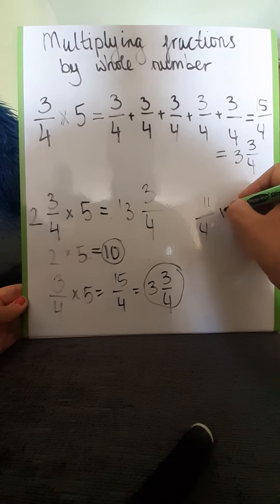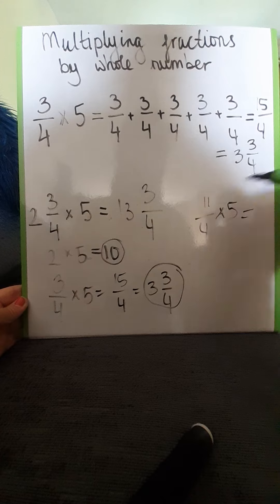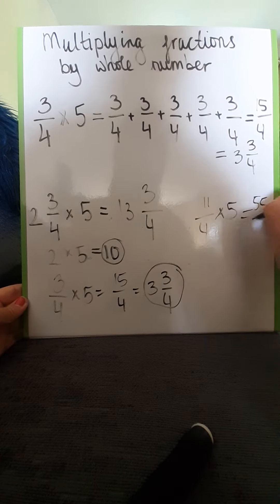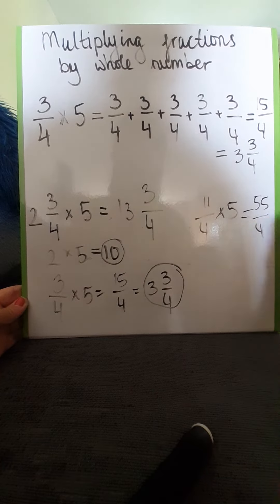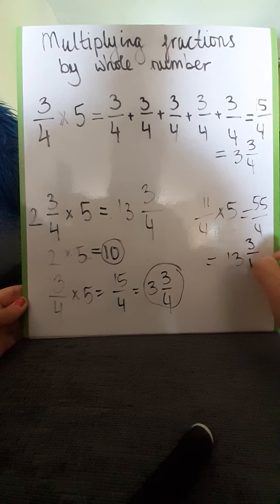And I could multiply then 11 quarters by 5 and that is 11 times 5, it's 55 quarters. So I know if I simplify that, there's going to be 13 and 3 quarters.